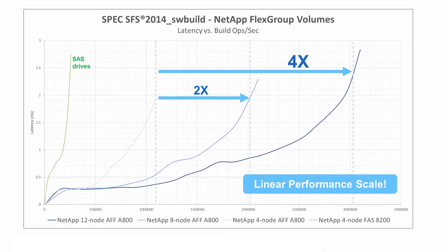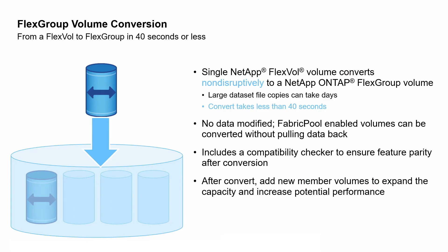NetApp FlexGroup volumes also provide linear performance scale as you add new nodes to your ONTAP cluster. We have several published results of the standard SPEC SFS software build benchmark that show how FlexGroup volumes help push the limits of what your cluster's performance can achieve.